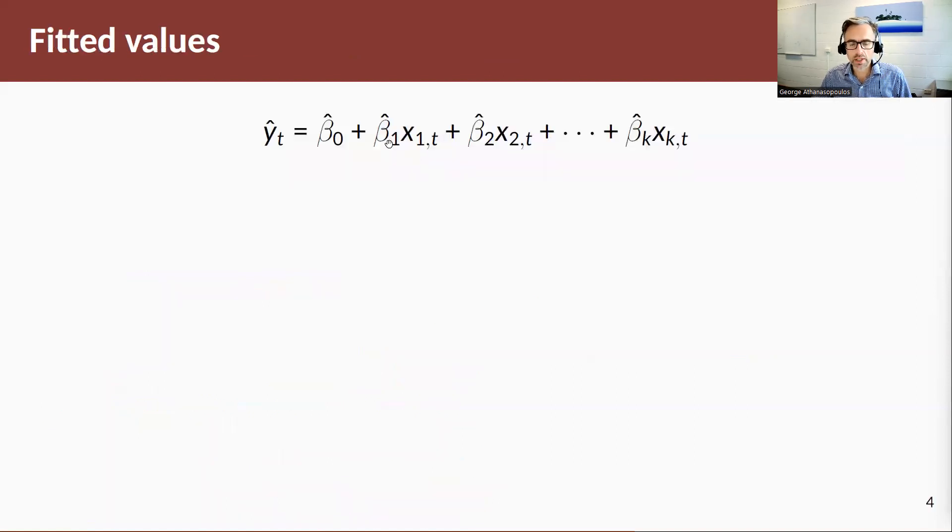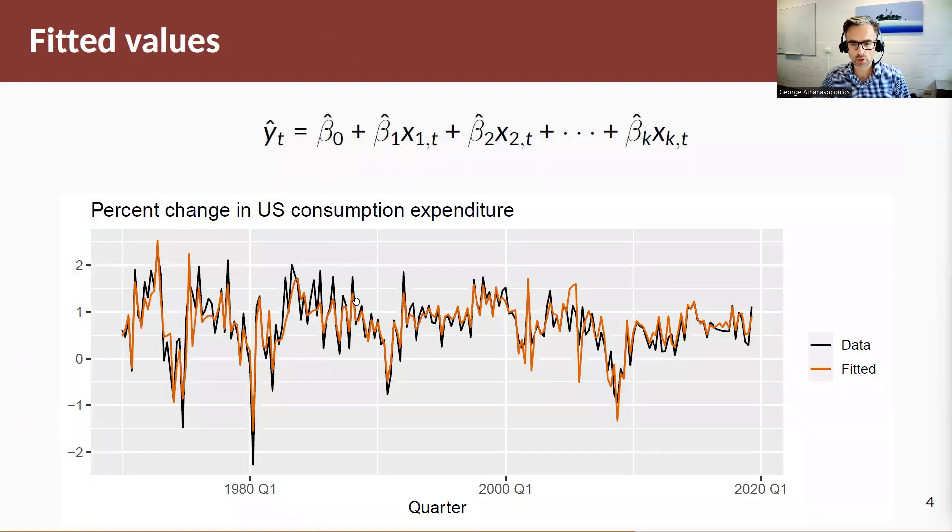So once you've estimated your coefficients, you can get your fitted values. Let's have a plot of those. The orange line here are the fitted values on top of the data itself. By just eyeballing this, you can see it fits the data pretty well. Now remember, this is all in-sample. This doesn't mean we're going to have great forecasts from this model—it means our model fits the data very well in-sample.